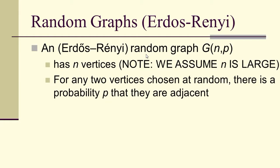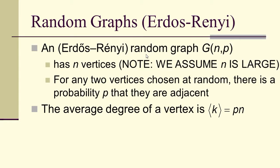One of the models we use quite often are called random graphs. An Erdős-Rényi random graph G(n,p) has n vertices, where n is large, and there is a probability p that for any two vertices chosen at random, they are adjacent. So you choose two vertices at random and connect them with probability p. That means the average degree of a vertex is <k> = p times n, the probability times the number of vertices.